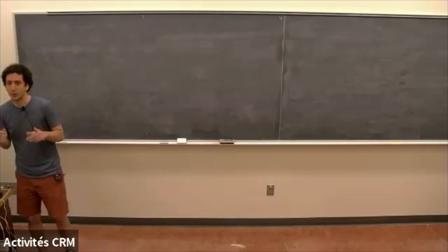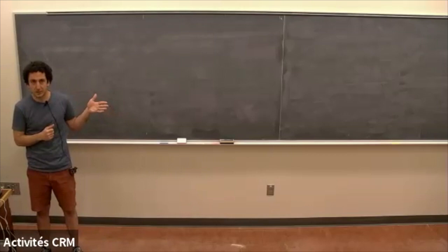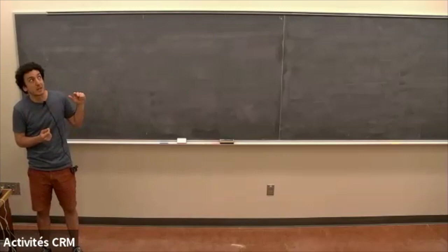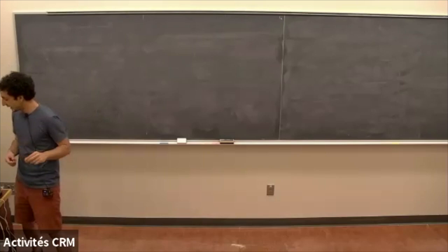Welcome back. Last time I defined median spaces as metric spaces such that there is some median point among any three. I gave many examples: CAT(0) cube complexes are median spaces with the l1 metric, R^n with the l1 metric, l1 spaces, ultralimits of cube complexes with scaling and degeneration, and certain asymptotic cones of more general groups.